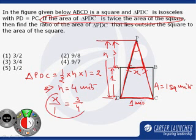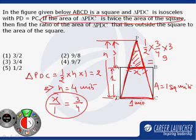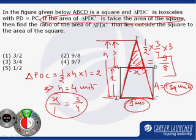You know the value of x. So the required ratio becomes 9 by 8, and the correct choice is option number 2.